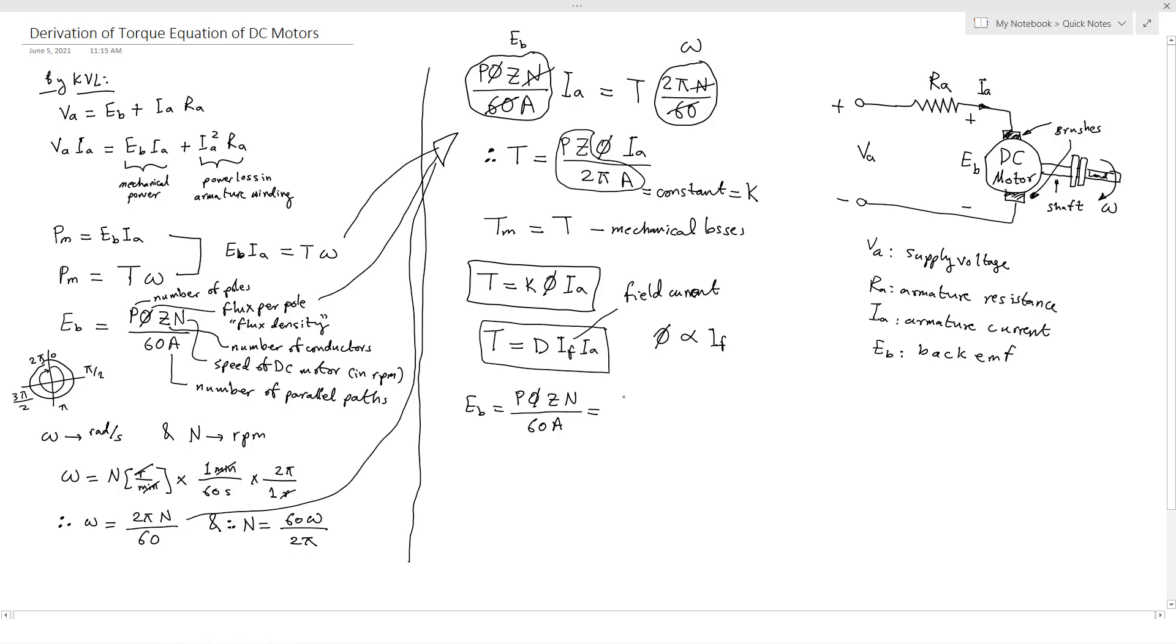So this one will equal P phi Z divided by 60, and let's put A here, and also we will put here 2 pi, and we can cancel this 2 pi here. So we put 2 pi and we cancel it also, and we will put N. This term will represent omega.